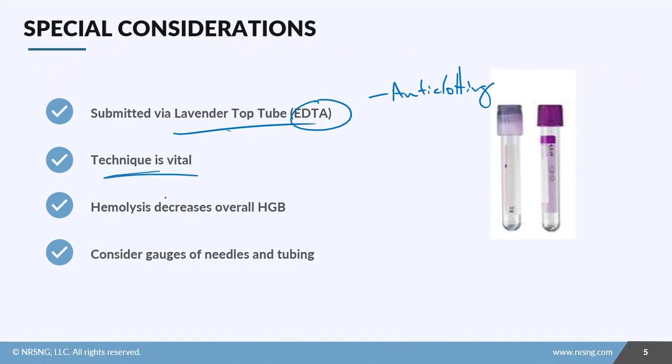Just like with our RBCs, we want to think about technique. We want to understand that if we use too small of a gauge of a needle or tubing, or if we force the blood sample into the tube, you're going to get hemolysis and breakdown. Hemolysis means you're literally breaking down the red blood cells, which means you're going to have a decrease in RBC production, which means you're going to have a decrease in hemoglobin, and it's not going to be accurate, and that could impact your patient.